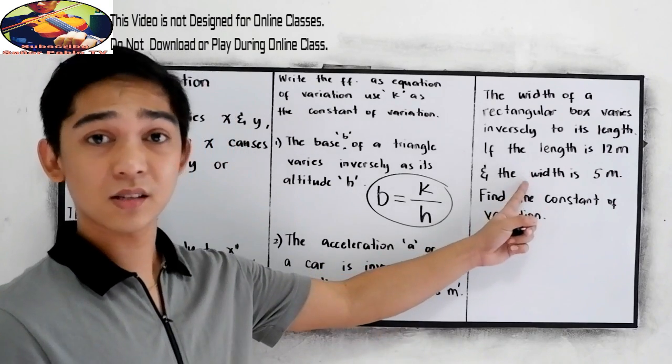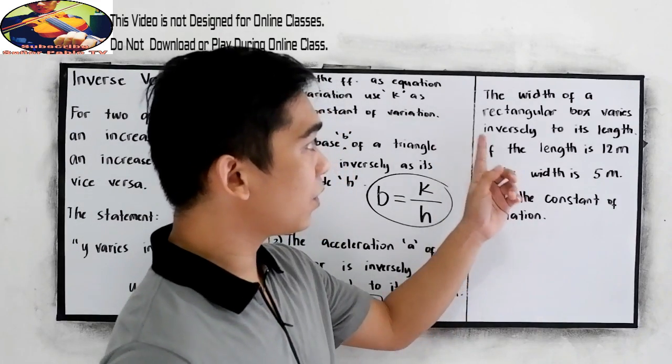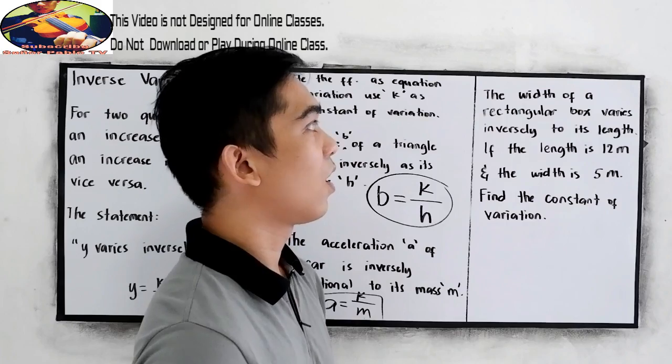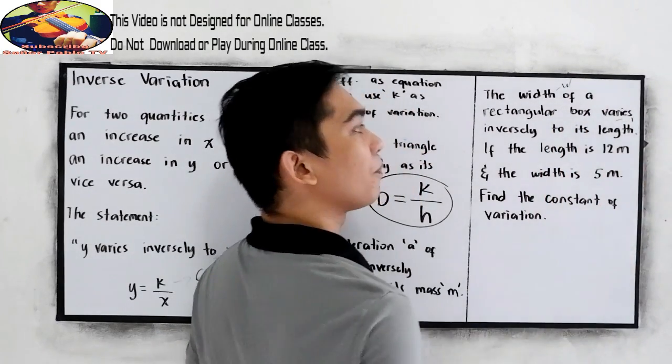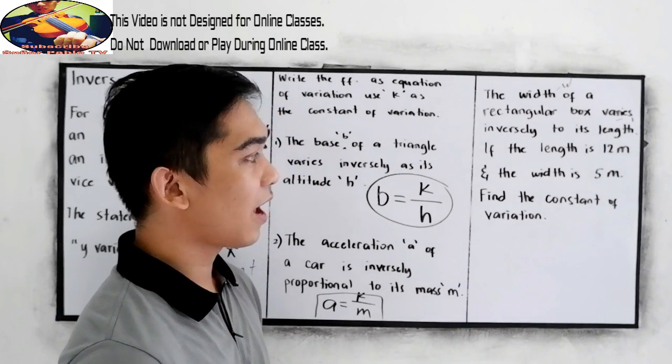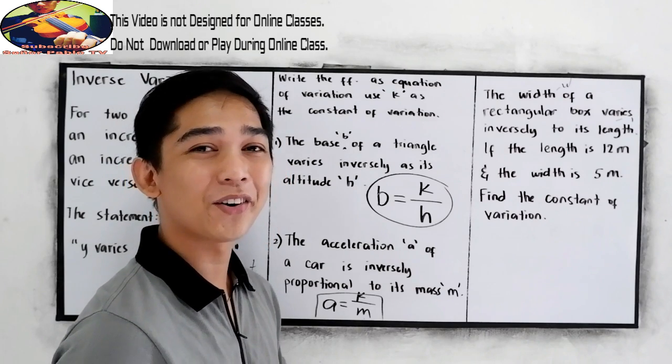Now, let's have this problem. The width of a rectangular box varies inversely to its length. Let's say our width is W and our length is L. If the length is 12 meters and the width is 5 meters, find the constant of variation.